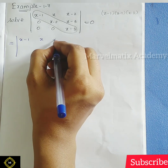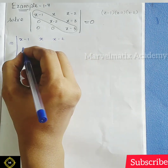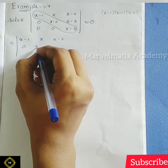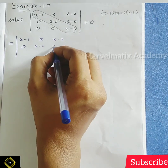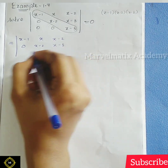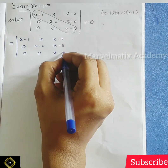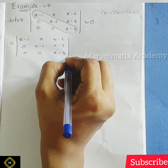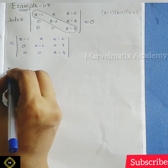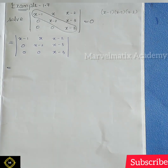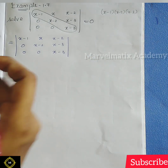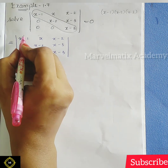So first, let's identify what number to use. The matrix is: x-1, x, x-2 in the first row; 0, x-2, x-3 in the second row; 0, 0, x-3 in the third row. So how do we proceed? First we find the determinant value.